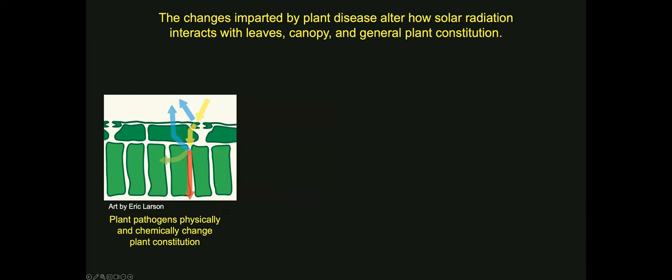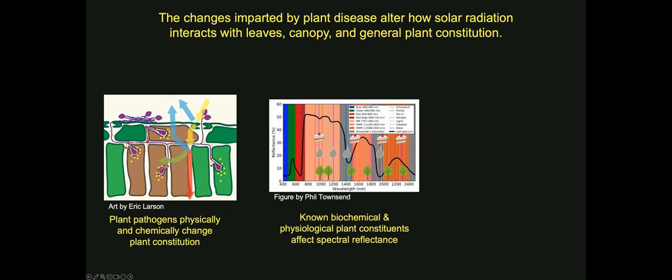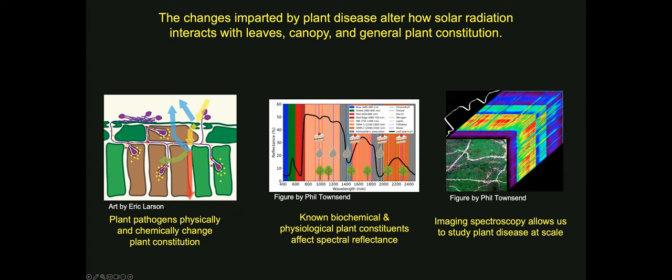The changes imparted by plant disease, including that caused by grapevine viruses, impact how solar radiation interacts with leaves, canopy, and general plant constitution. Solar light will do one of three things when it interacts with the plant: it will be reflected back, transmitted through, or absorbed for photosynthesis. The majority of light is actually reflected back after being both internally and surface dispersed. We know that plant pathogens physically and chemically change plant constitution, which changes that reflected light — light that can be measured by a sensor as distantly placed as a satellite in space. This known link between biochemical and physiological plant constituents and spectral reflectance, combined with imagers, allows us to study plant disease at scale.